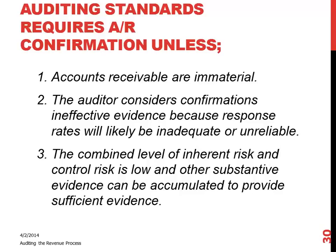We'll talk in a minute about alternative procedures. They might send out negative confirmations for smaller balances, but for larger balances they're performing other alternative procedures. If the auditor thinks that evidence gathered from confirmations would not be sufficient and appropriate, and you document your rationale, then they don't have to perform it. And if the combined level of inherent risk and control risk is low, and other substantive evidence can be accumulated, they don't have to confirm — that's the scenario where negative confirmations might be used for smaller, low-risk balances.